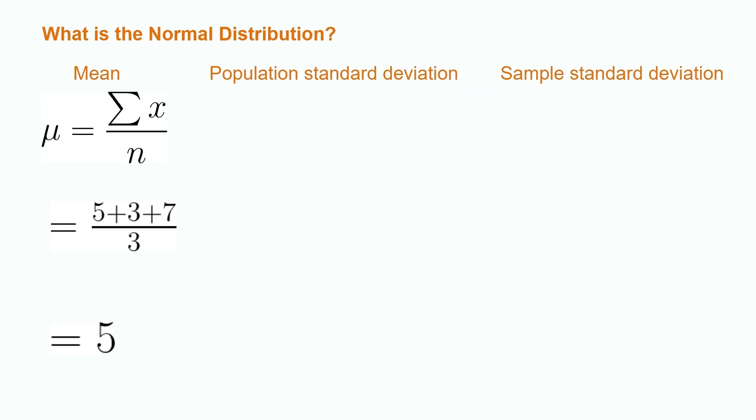There are two ways to find the standard deviation. One way is used when we have all data points from a population, and the other is used when we only have a sample of data points from a population.